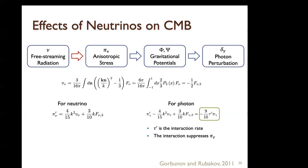For photons, the interaction is the scattering rate between photons and baryons, mostly hydrogen — so anisotropic stress cannot develop in the early universe and remains negligible until photon-baryon decoupling. However, for neutrinos, there is no such suppression term, so anisotropic stress evolves freely. This is the main difference between free-streaming and interacting radiations.